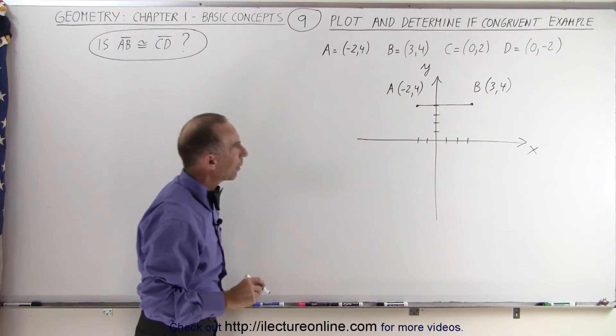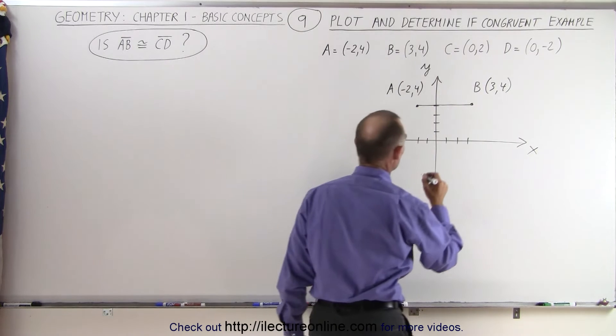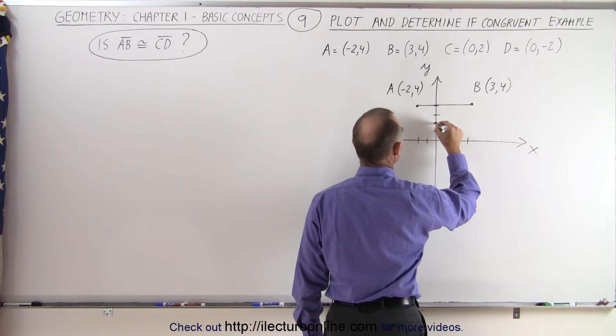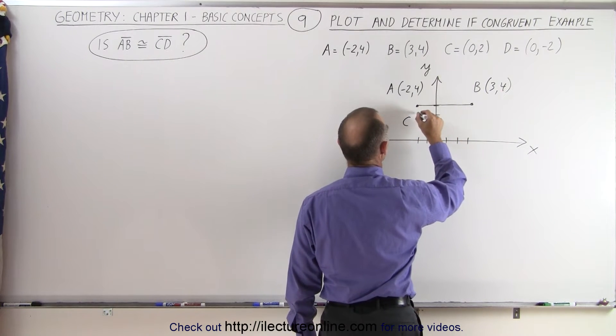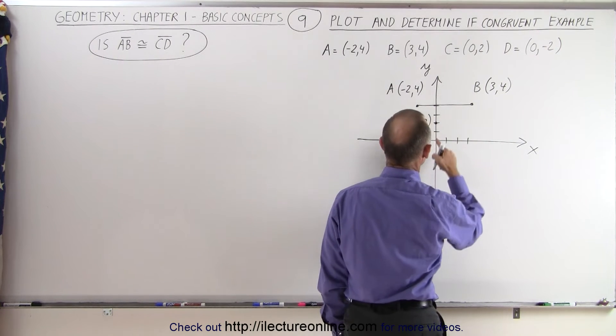Now we go to our next segment. So C is 0 and 2, that would be this point right there, this is C. And D which is 0 and negative 2.